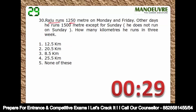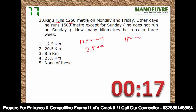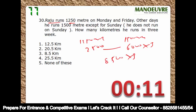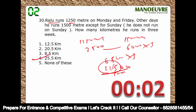Raju runs 1250 meters on Monday and Friday, 1500 meters on other days except Sunday — he does not run on Sunday. So: 1250 × 2 days = 2500, and 1500 × 4 days = 6000, total = 8500 per week. Over 3 weeks: 8500 × 3 = 25,500 meters. Divided by 1000 = 25.5 kilometers. Lovely — easy, 25.5 km.